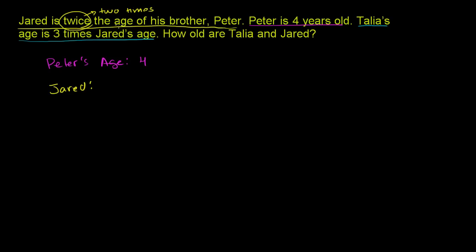You could say Jared is twice the age of his brother, or Jared is two times the age of his brother. Well, his brother is four — they told us that right over there. So Jared is going to be two times four years old. And if you know your multiplication tables, you know that's the same thing as eight. Two times four is eight, or four plus four also gives you eight. So Jared's age is equal to eight.